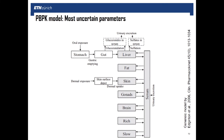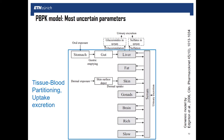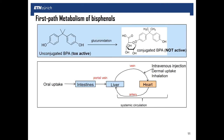Our PBPK model is a generic model based on Eddington et al. In the blue part, we have mostly independent parameters, and in the red part, the metabolization. Metabolization is very important for bisphenols because they are detoxicated in the liver and intestines after oral uptake, but they are not detoxified — or only when they reach the liver — after intravenous injection, dermal uptake, or inhalation. So when we take into account the different uptake routes, we also have to take into account different metabolization. These are really crucial for the exposure assessment.